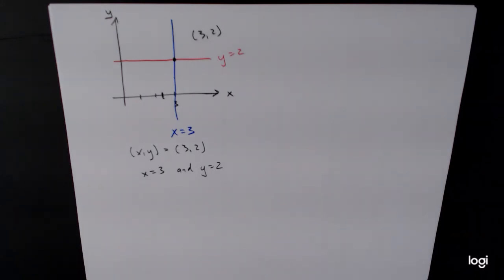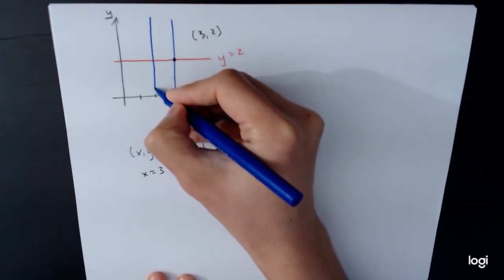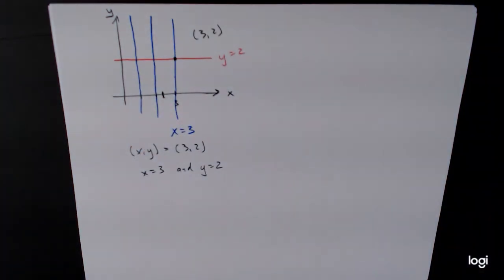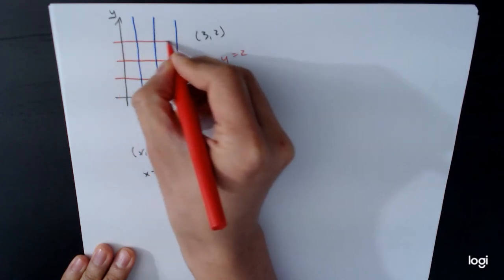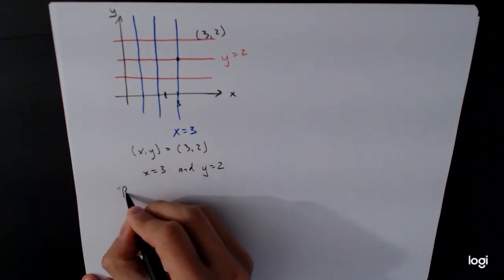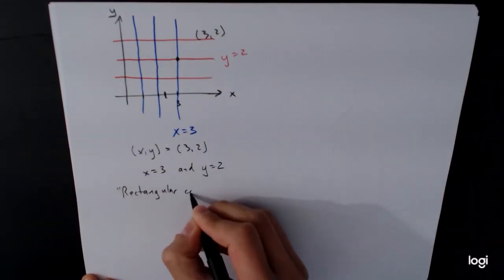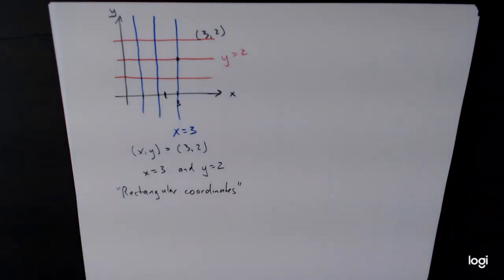And if you keep on drawing out this diagram a little bit more, what you end up doing is you end up creating a grid built out of squares. And this sort of hints at why we call this rectangular coordinates sometimes. Rectangular coordinates. And that's because the basic shape, the fundamental shape of our grid is a rectangle.